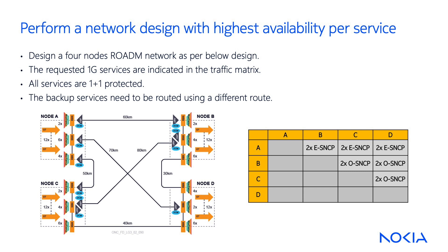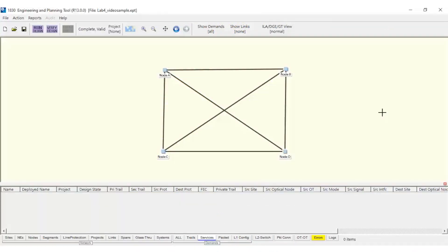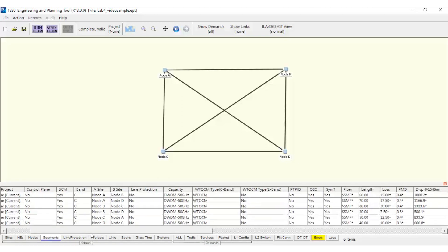Next, we'll complete the following lab exercise using EPT. We'll evaluate the traffic demand and the network configuration. Then, we'll define the four sites as in the network diagram, with their fiber lengths whose optical characteristics reflect the physical deployment. Now we can move to the EPT software, where we have defined our design's optical segments and sites.